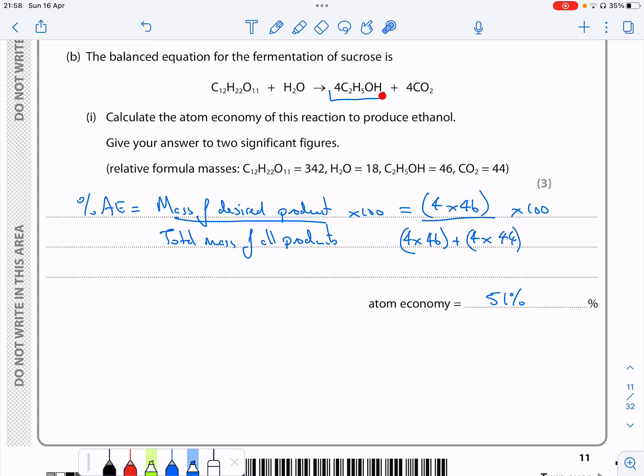If we want to get ethanol and it tells us the mass of the ethanol is 46, so we do four lots of 46—that's the desired product—and then we divide it by the total mass of these products. So it's four times 46 and we add in four lots of carbon dioxide, which is four lots of 44, and then multiply the whole thing by 100. That gives us 51 percent.